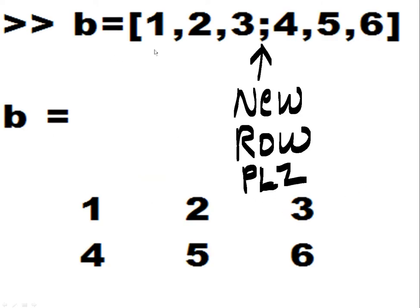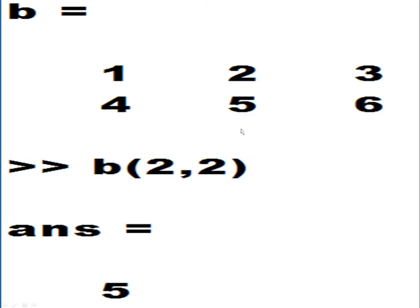Now I do it again. B equals square brackets 1, 2, 3, semicolon, that means new row, and 4, 5, 6. And I get this: 1, 2, 3, 4, 5, 6. So now I got a 2-row array, or matrix.